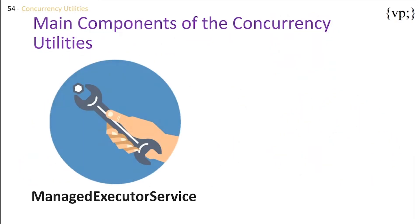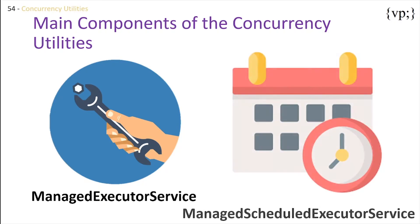The main components of concurrency utilities, which basically make everything work together, are: first of all, managed executor service. A managed executor service is used by applications to execute submitted tasks asynchronously and are managed by the container. Managed scheduled executor services are just like the managed executor service, but you can specify a certain time to activate it.